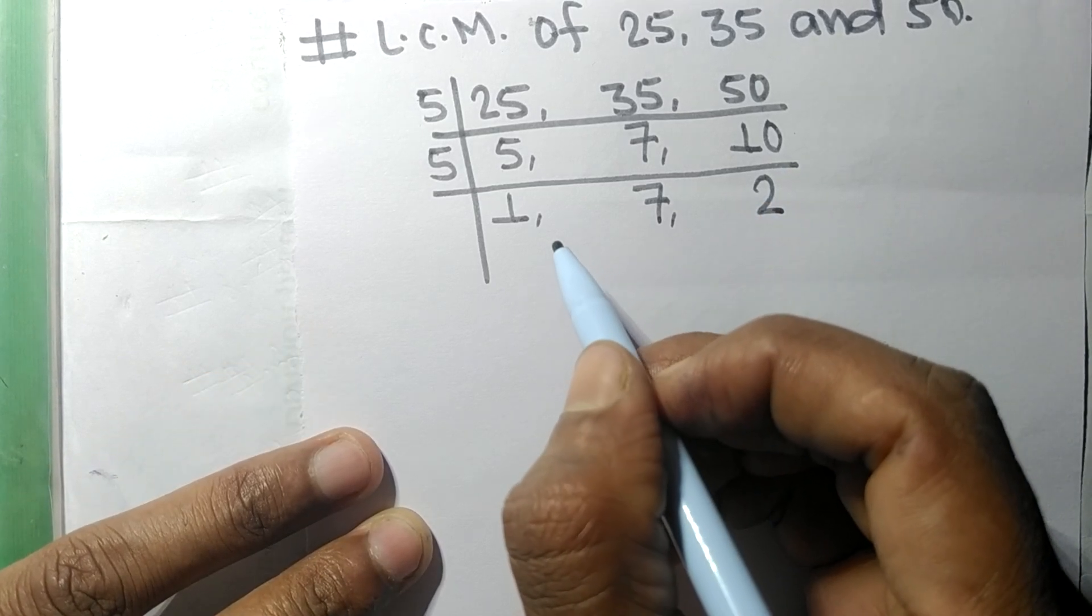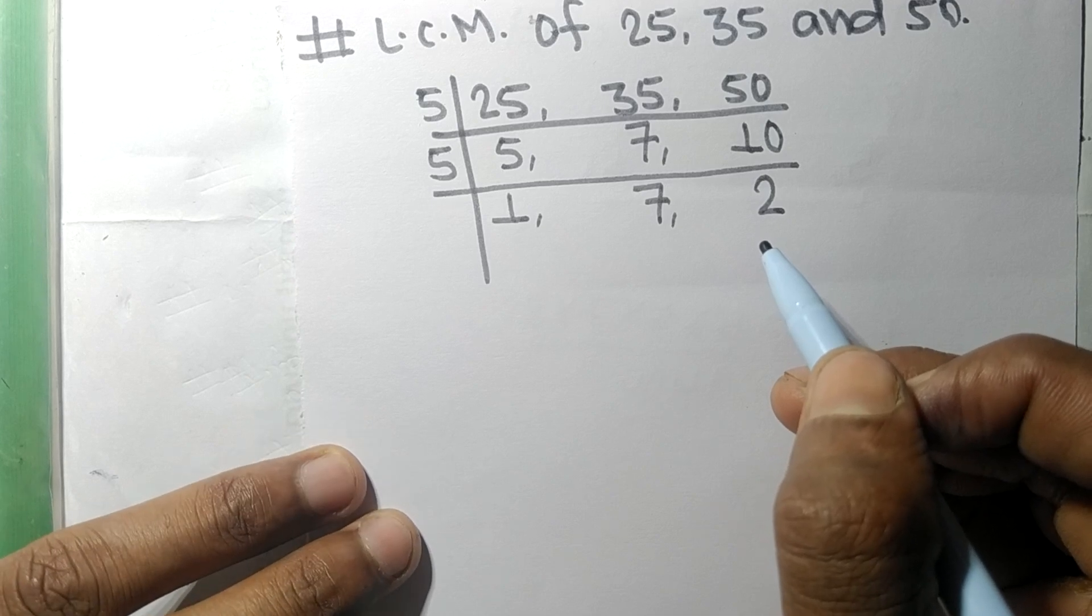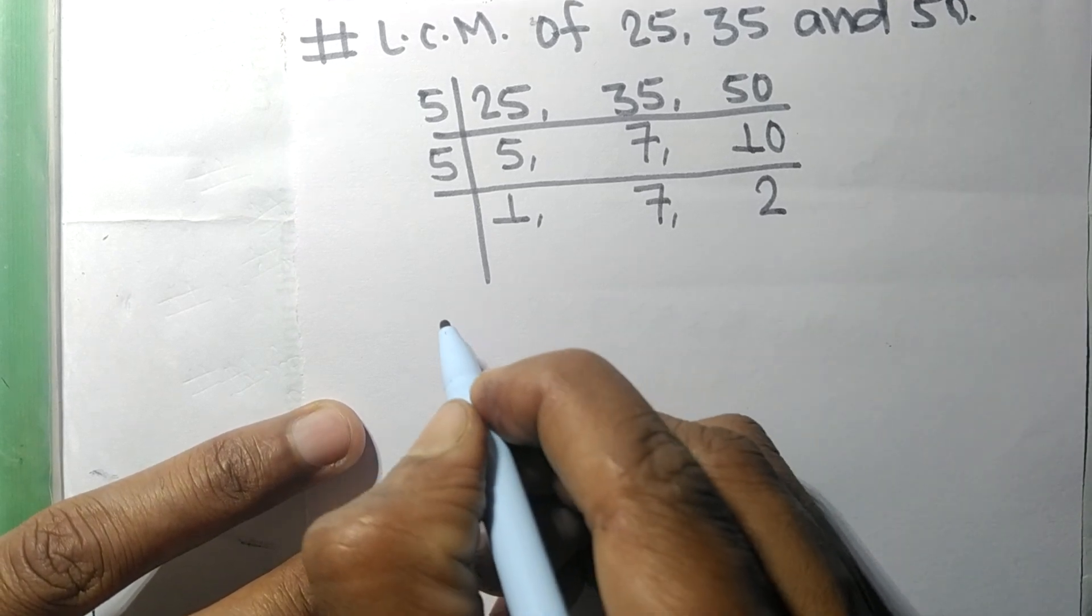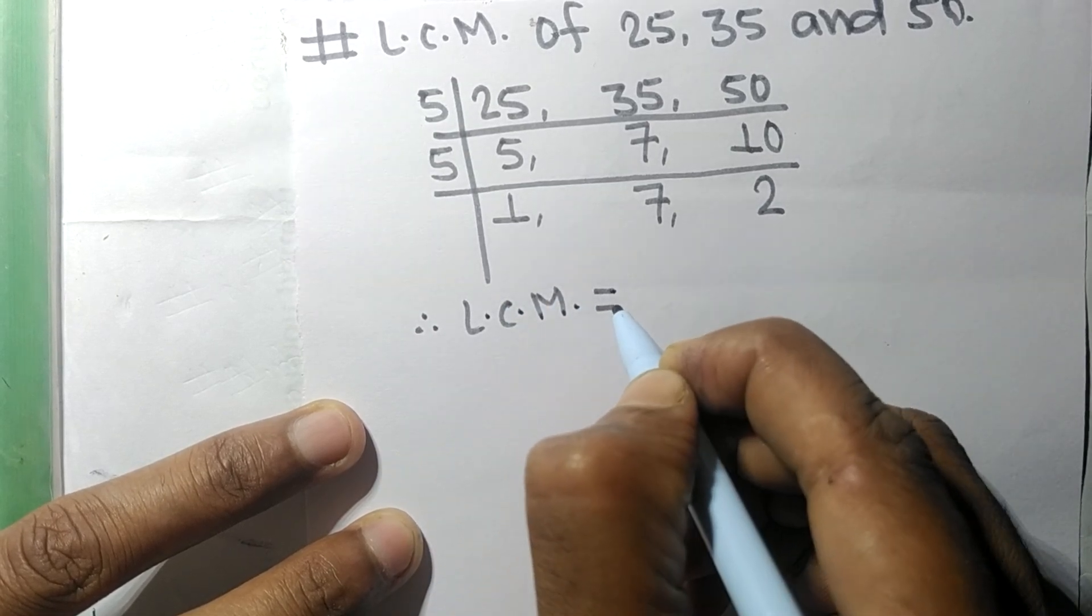So now the numbers 1, 7, and 2 are not divisible by the same number. Therefore, its LCM is equal to...